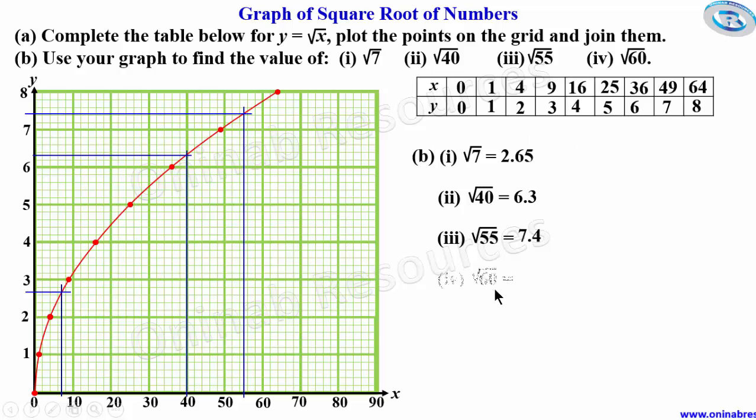Then the last one which is √60. x is 60. We draw the line to touch the curve and from there we draw to the y-axis and this is approximately 7.8. So we have it as 7.8 as the approximate root of 60.